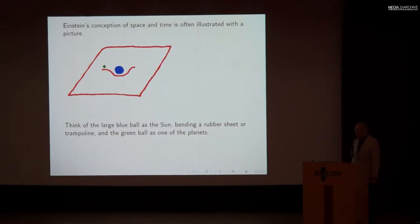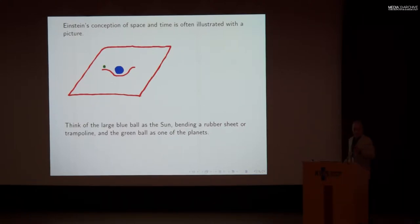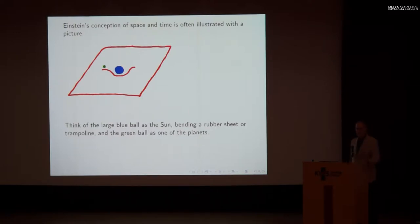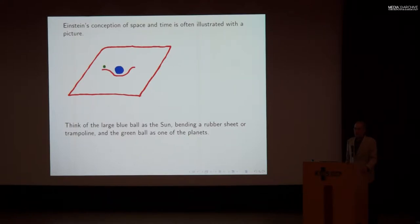Einstein's conception of space and time is often illustrated with a picture. You imagine space as a rubber sheet. The blue ball is a mass you might think of as the sun. In Einstein's theory, the sun causes a curvature of the space around it — the sun presses down on the rubber sheet, which therefore is curved. The green ball perhaps represents one of the planets. What we see as curved orbits of the planets around the sun, according to Einstein, is the space itself that's curved, and the planet is merely traveling on the closest thing there is to a straight line in a curved space.